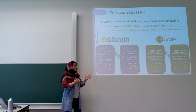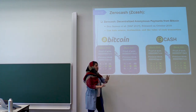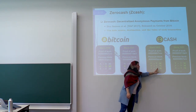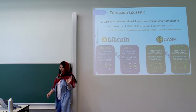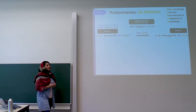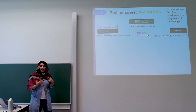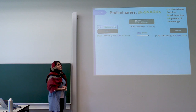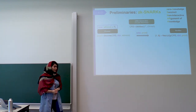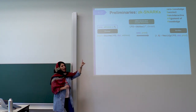If you compare the ledger of Bitcoin with the ledger of Zcash, in Zcash you will see that everything is hidden — for example, source, destination, and the amount of transactions are all hidden. I want to explain a bit about zkSNARKs since I will talk about how Zcash uses them. zkSNARK stands for Zero Knowledge Succinct Non-Interactive Argument of Knowledge.